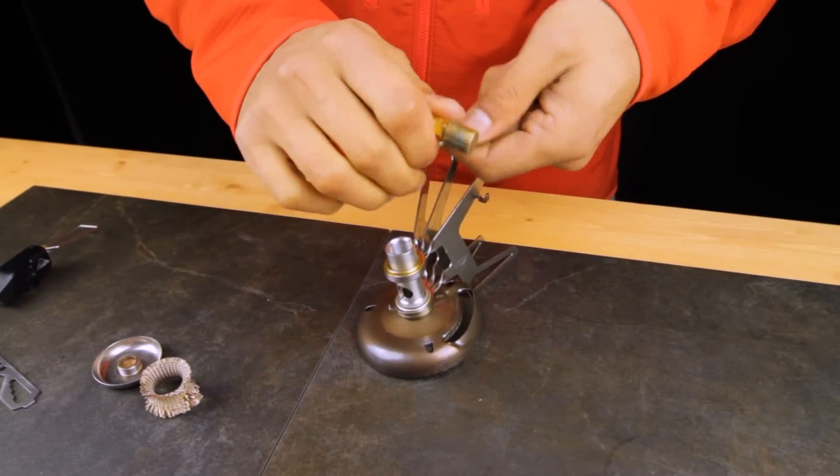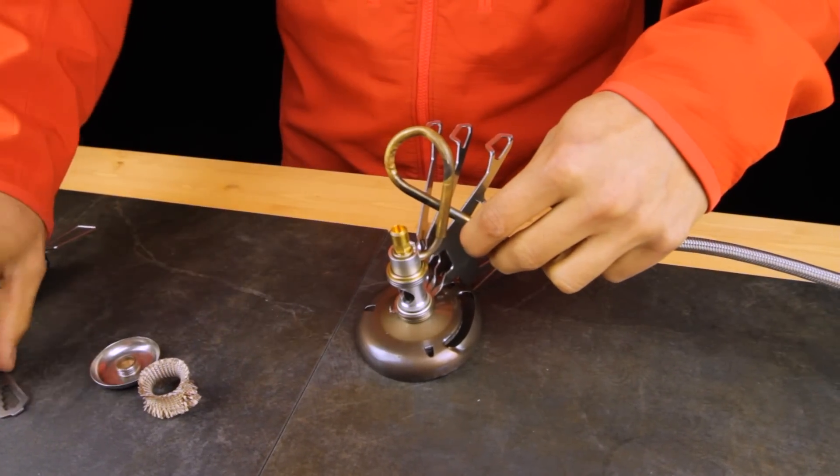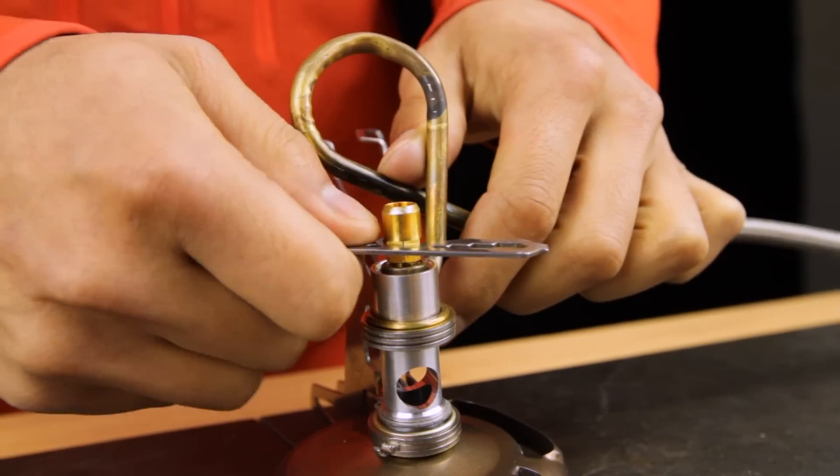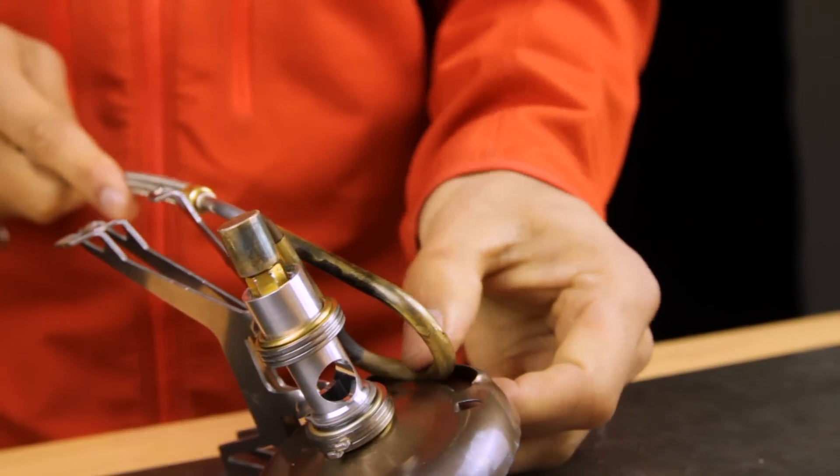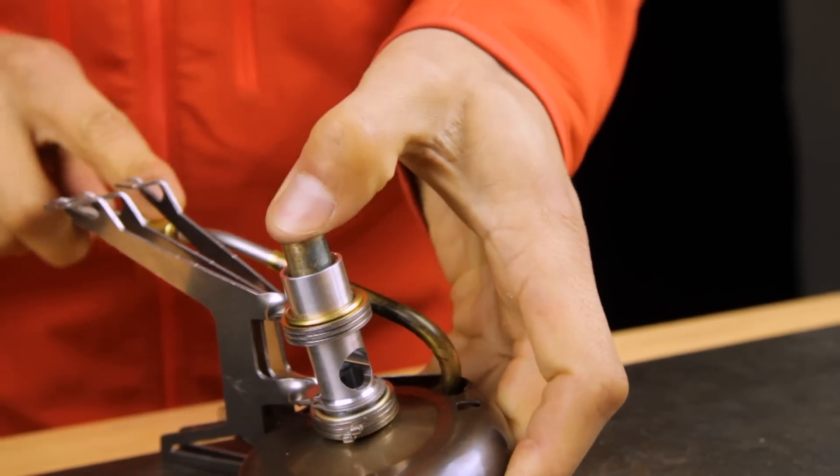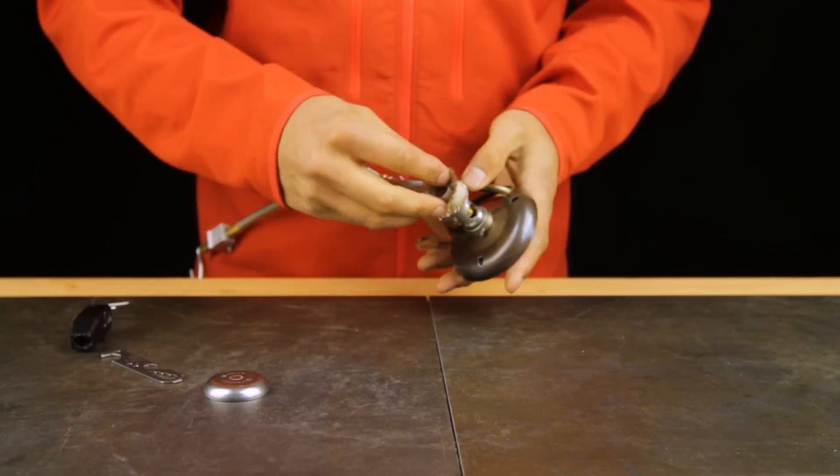Replace the fuel jet with the one corresponding to the intended fuel type and snugly tighten it in place with the jet and cable tool. Reinsert the elbow into the mixer tube in the correct orientation. Replace the wick and priming cup to reassemble the stove.